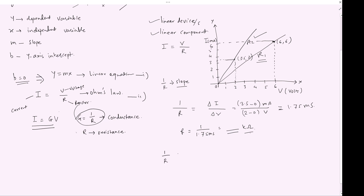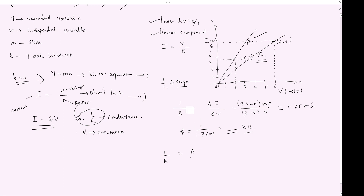For R1, we measure the slope using coordinates of 6 milliamps and 6 volts. So the slope is 6 minus 0 milliamp divided by 6 minus 0 volts, which equals 1 milli-Siemens. The unit of conductance is Siemens, and therefore the resistance is 1 over 1 milli-Siemens, which is 1 kilo-ohm.